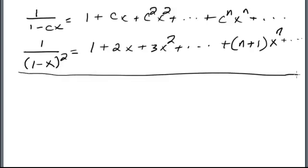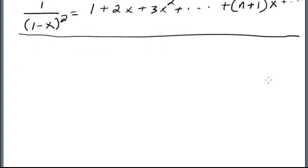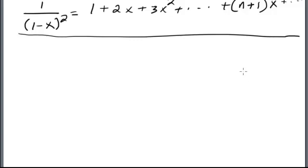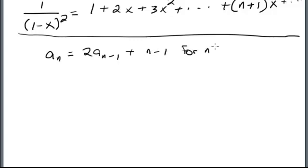Now we want to do a recurrence — this is going to be only our second recurrence. Hopefully I can pick up the pace with recurrences as we get some of the basic stuff out of the way. The recurrence relation is a_n equals 2a_{n-1} plus n minus 1, for n greater than 0.